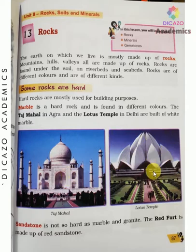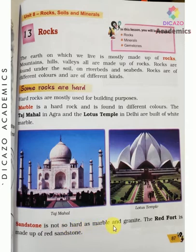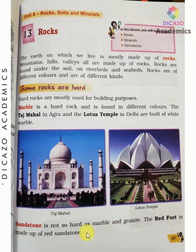The second type of rock is sandstone. Sandstone is not as hard as marble and granite, so it is not very strong. The Red Fort is made up of red sandstone.